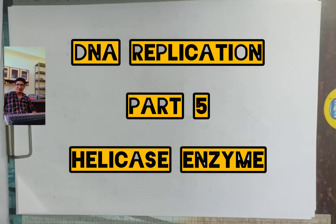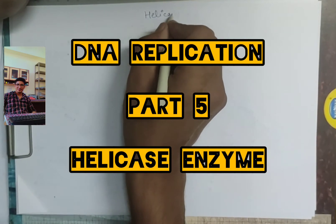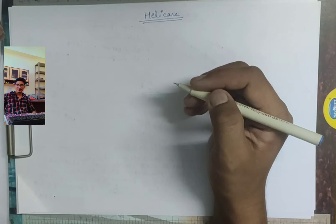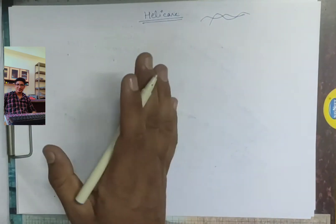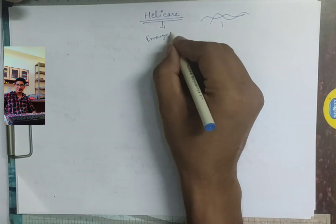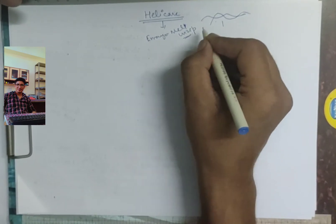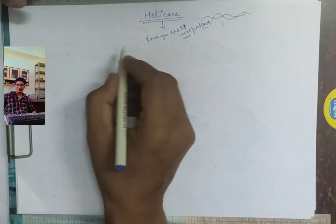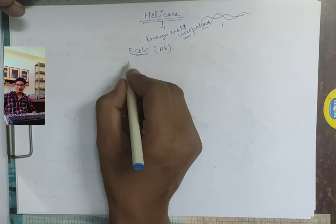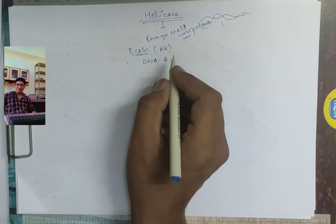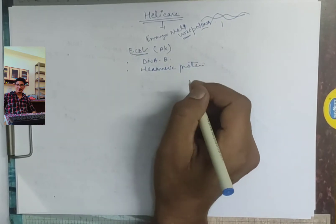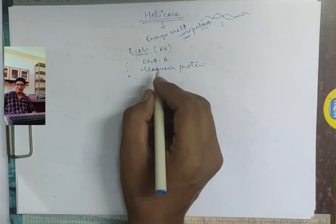Let's come to the topic: helicase enzyme. Helicase is an enzyme used for DNA unwinding. DNA polymerase cannot unzip double-stranded DNA — helicase is the enzyme which actually melts and unzips this double-stranded DNA. In the case of E. coli and prokaryotes, helicase is called DNA B. It is a hexameric protein.